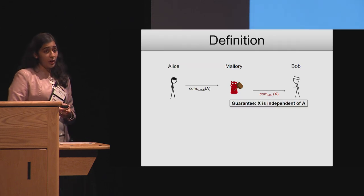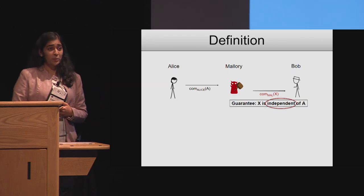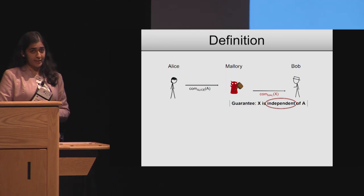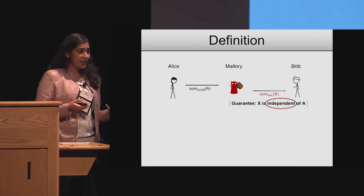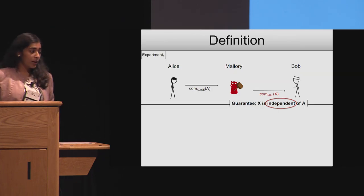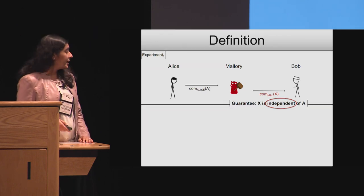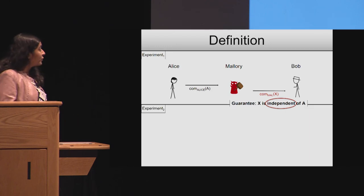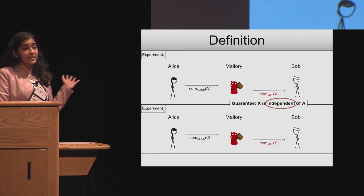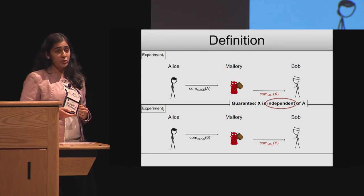Before going on to our construction, let's go back to the definition and try to understand what it means to say that the value x committed by Mallory is independent of the value a committed by Alice. What we want to intuitively say is that Mallory's behavior is independent of Alice, or independent of even the existence of Alice. One way to formalize this is the following. Let's imagine another experiment where instead of committing to her input, Alice just committed to zero. So Alice's input didn't even exist in this other experiment. Now let's look at the distribution of values y that Mallory commits to in this other experiment.